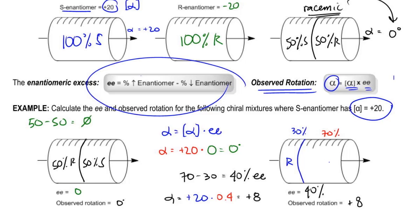Well, if I were to look at my tube as broken up into parts, what I would see is that the 70% is actually broken up into two parts. There's 30% here, S. That is perfectly canceled out by 30% R. So what that means is that this entire area right here is racemic.